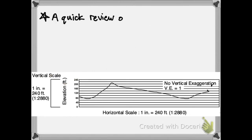Here's a quick review of how to think about map scale. If you have one inch on the vertical scale in this topographic profile, that one inch on the map represents 240 feet in reality of vertical elevation difference.